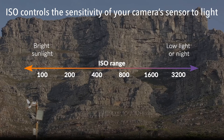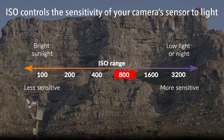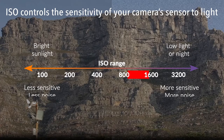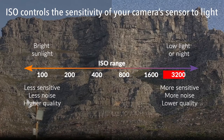As you up your ISO — going from 100 to 200 to 400 to 800 — your sensor, through some clever electronics, becomes more and more sensitive to light. As it becomes more sensitive, it also generates more and more noise. Noise in photography is those little speckles that you see on images, and it's not always pleasing.